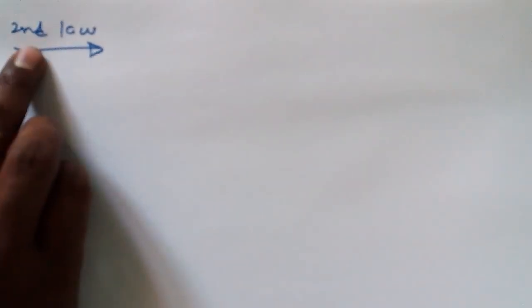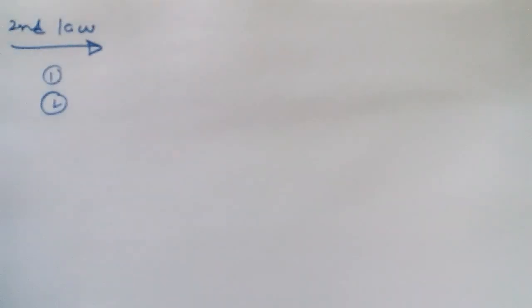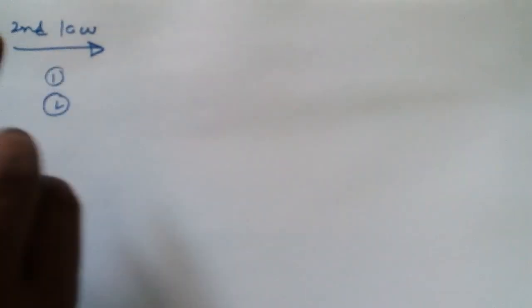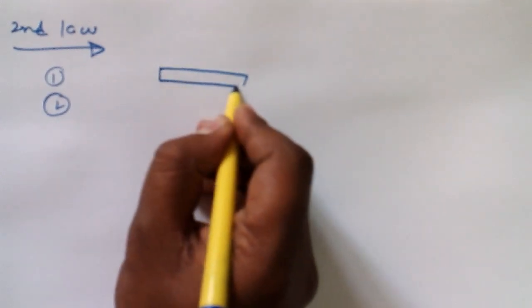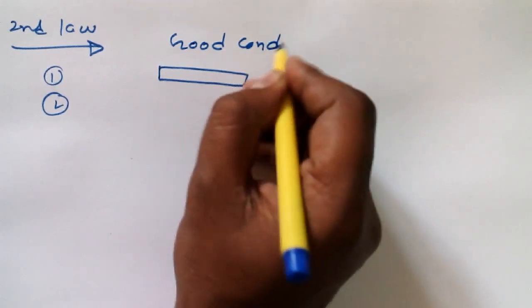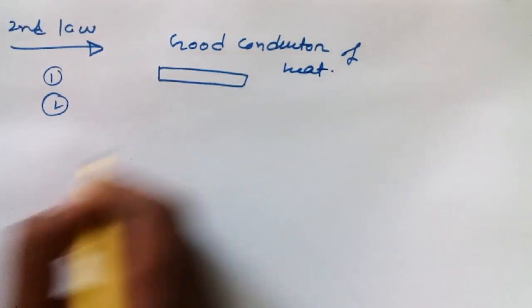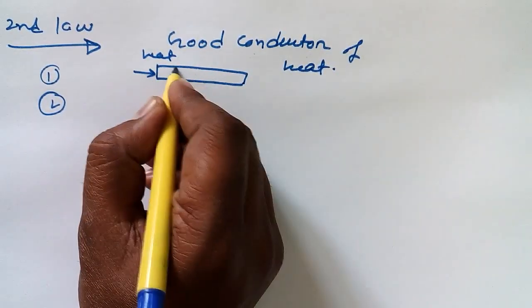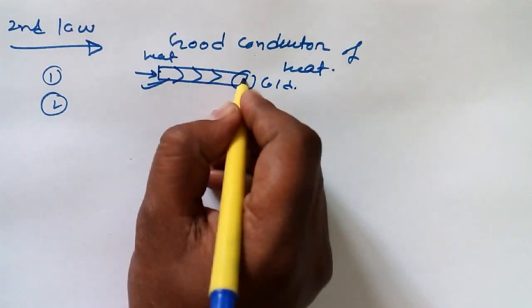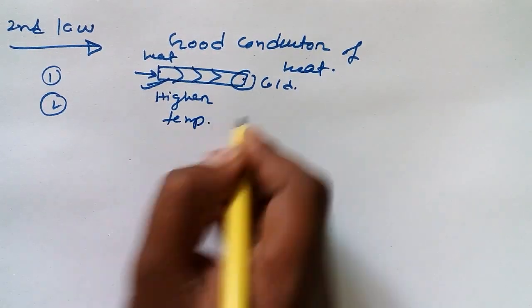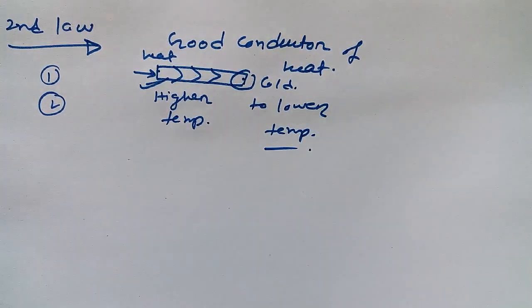Now, what is the Second Law of Thermodynamics? The Second Law has two definitions and a few consequences. To understand it simply: consider a rod that is a good conductor of heat. If you heat one side (the hot junction), heat will flow from the higher temperature side to the lower temperature side. This is a fundamental concept of the Second Law.